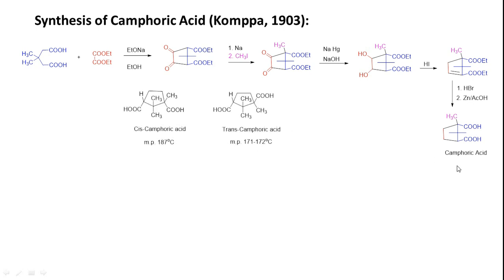In case of camphoric acid, two geometric isomers exist: both COOH groups on one side (cis-camphoric acid) and one COOH on each side (trans-camphoric acid). Scientists were surprised to find both derivatives available in the natural mixture.